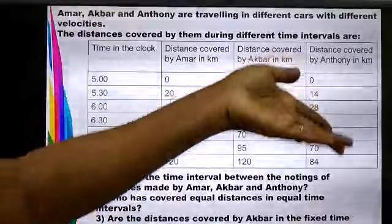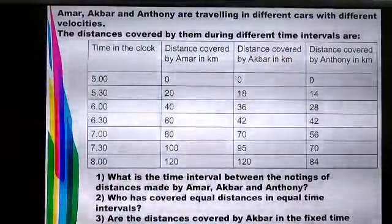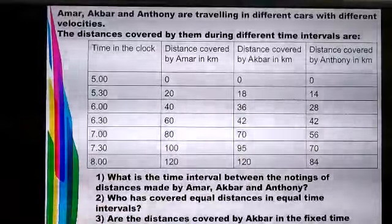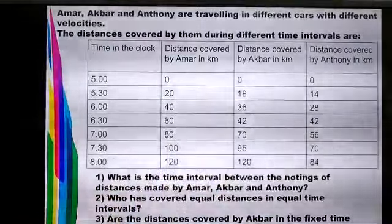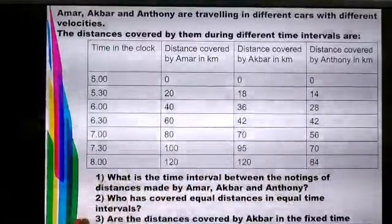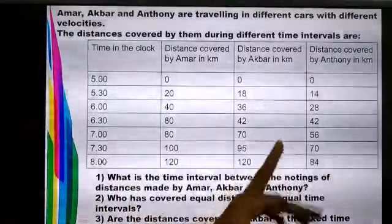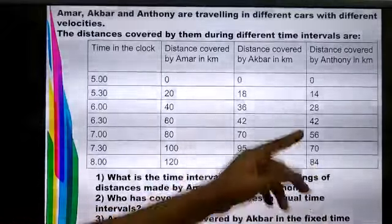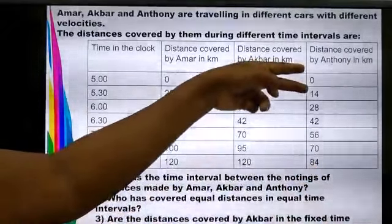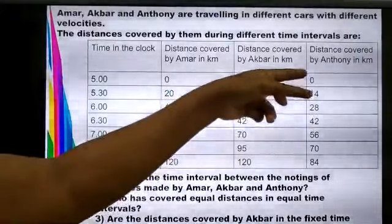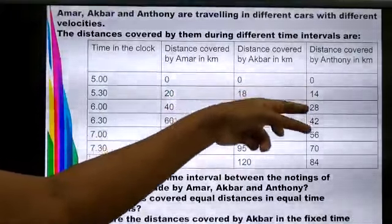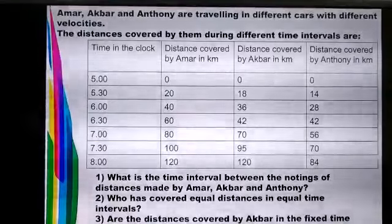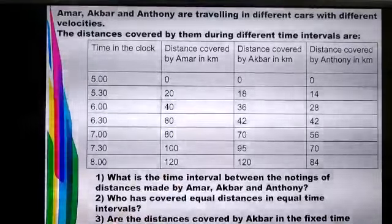Anthony's car covers 0 km at 5 o'clock, then 14 km at 5:30, 28 km at 6:00, 42 km at 6:30, 56 km at 7:00, and 84 km at 7:30. The difference between each consecutive distance is always 14 km, so Anthony has covered equal distances in equal intervals of time — his speed is uniform.